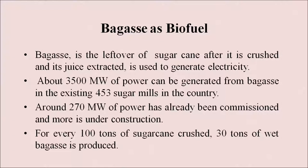Bagasse as biofuel: bagasse is the leftover of sugarcane after it is crushed and its juice extracted. It is used to generate electricity. About 3500 megawatts of power can be generated from bagasse in the existing 453 sugar mills in the country. Around 270 megawatts of power has already been commissioned and more is under construction.